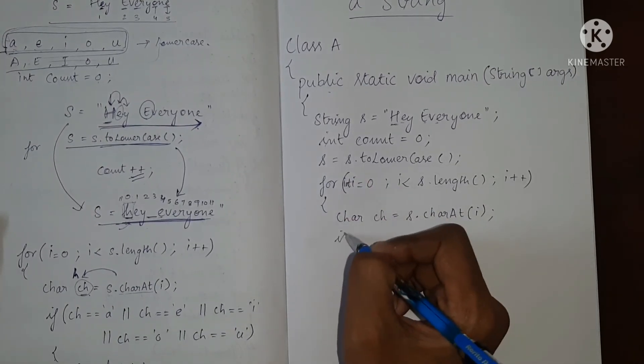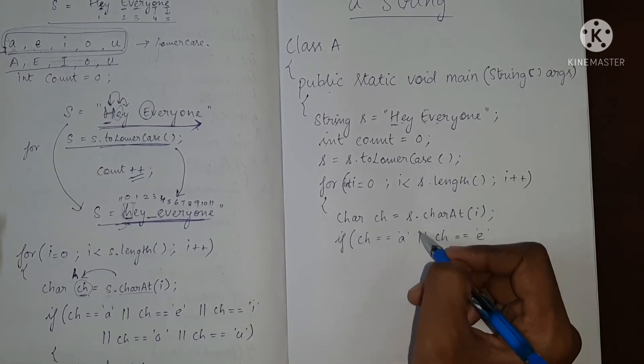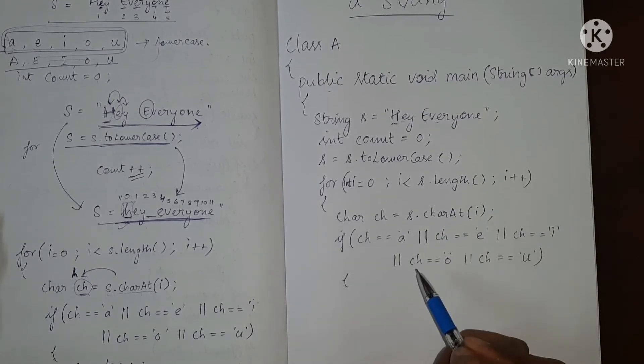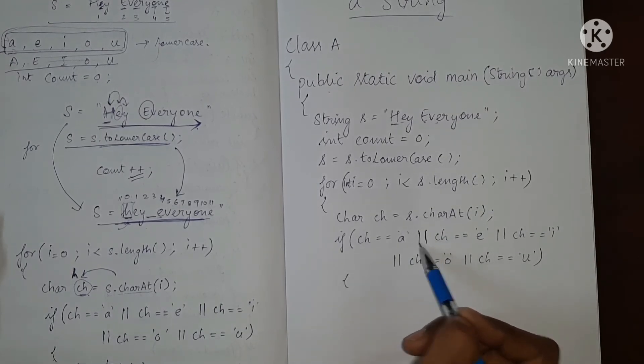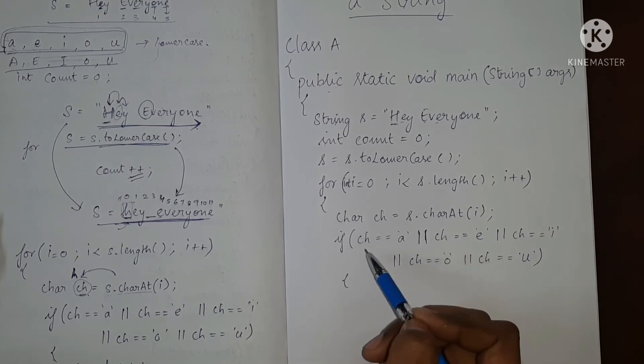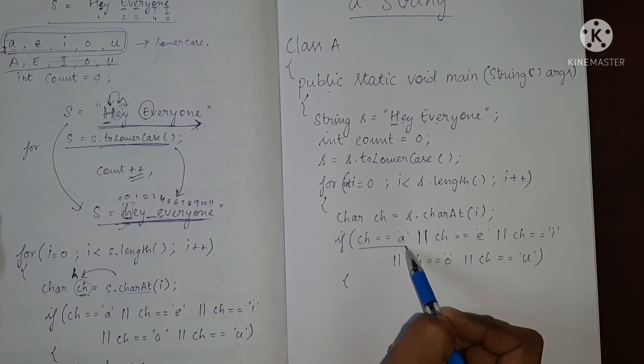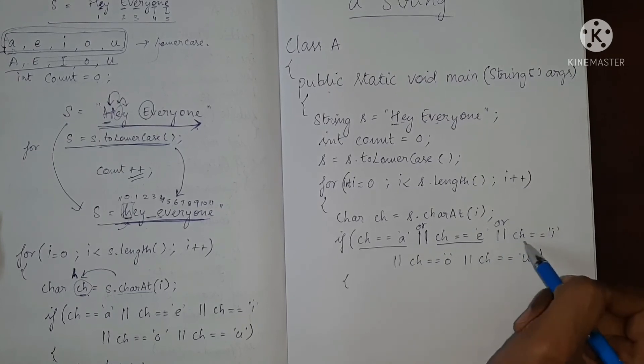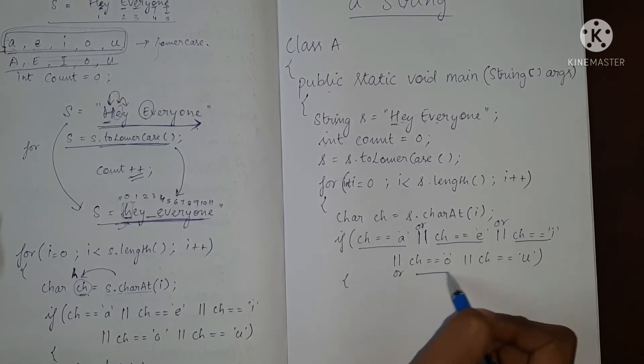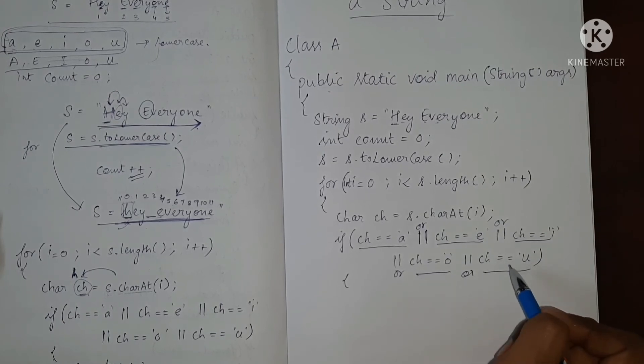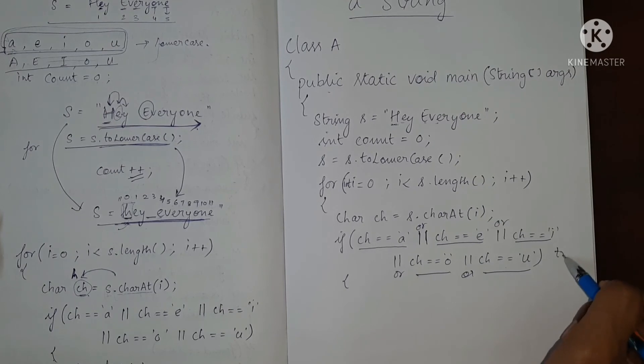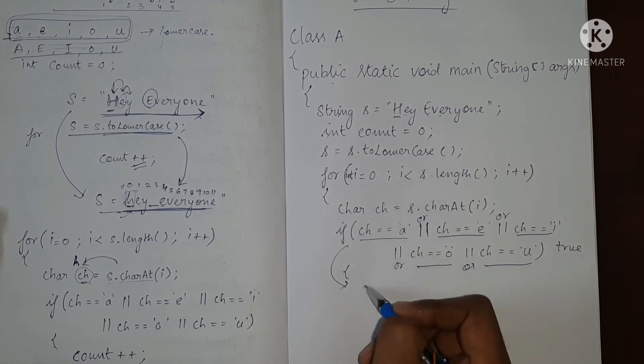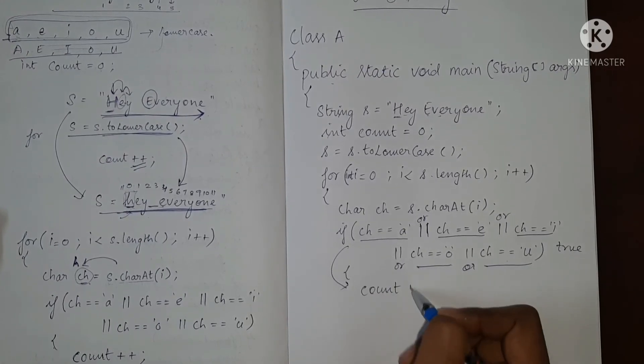Now we are going to check if it is a vowel. I hope you understand the logic of OR gate here. This is nothing but if this condition is true or if this is true or if this is true or this or this. If any of these condition, even any one of these condition is true, then we will enter the if statement.